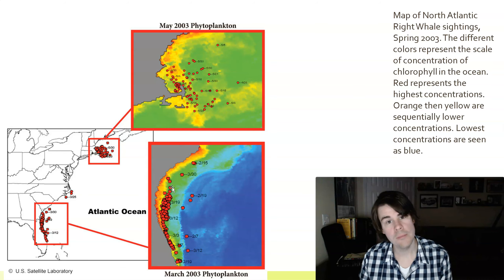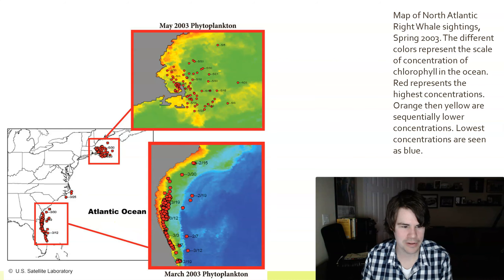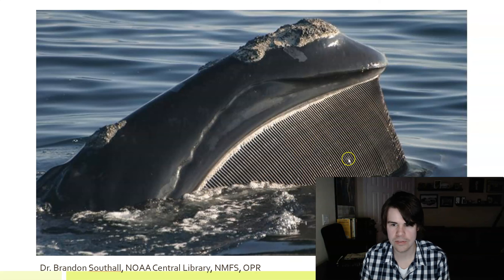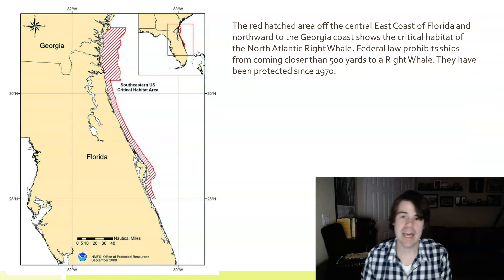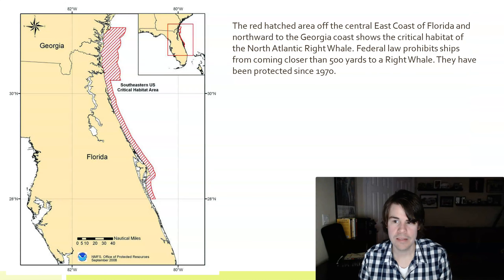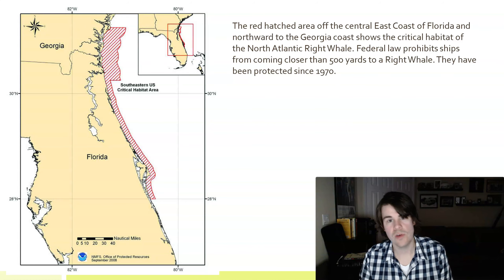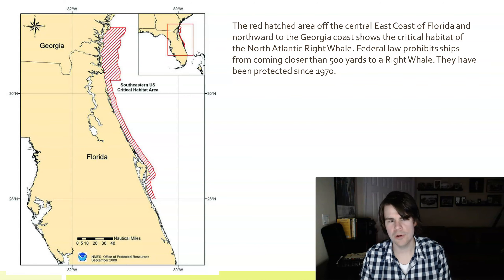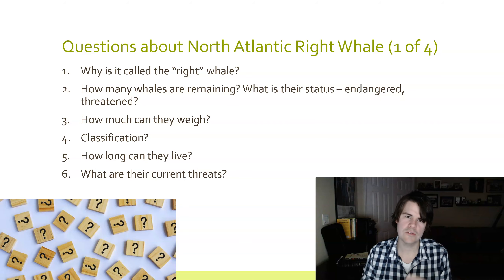Since the North Atlantic right whale are located where the phytoplankton are, this suggests they need to be around phytoplankton because they either eat them or something that feeds on the phytoplankton. You can see the baleen plates in this picture. They've been protected since 1970. The east coast of Florida northward to Georgia is critical habitat for the North Atlantic right whale, with various rules and regulations for ships, fishing, and nets to try to protect these animals.